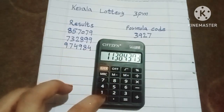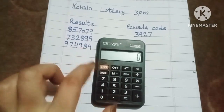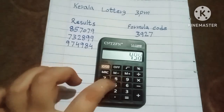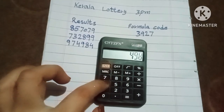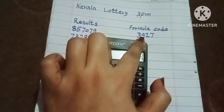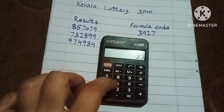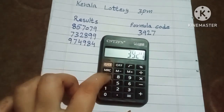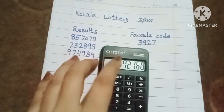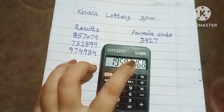Zero the calculator again, put this last four digit number — 4984 — and multiply by the same formula code 3927. After equal, you can check the same place number is becoming for the next row of Kerala lottery 3 p.m.